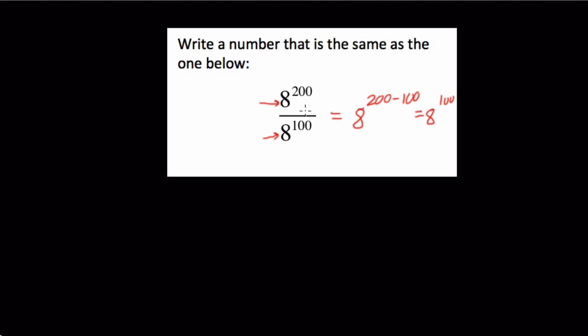This makes a lot of sense if you think about what's happening, first of all, on a smaller scale. If you had 8 to the 4th over 8 to the 3rd, well...